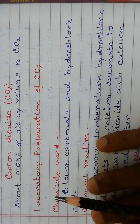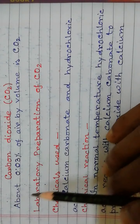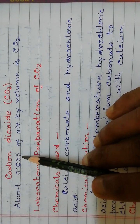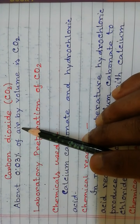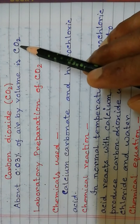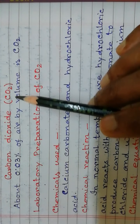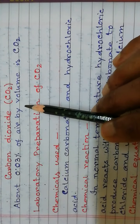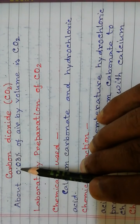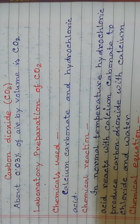Carbon dioxide is a compound, and about 0.03% of our air by volume is carbon dioxide. That means carbon dioxide is present in air at 0.03% by its volume.